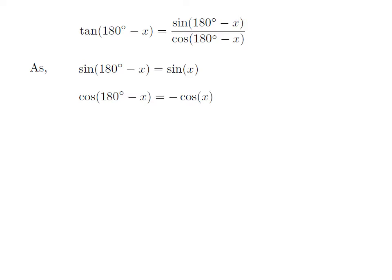We also know the trigonometric identity: cosine of 180 degrees minus x is equal to minus cosine of x. The proof of this identity has been explained in the video appearing in the upper right corner, and the URL has also been mentioned in the description section.